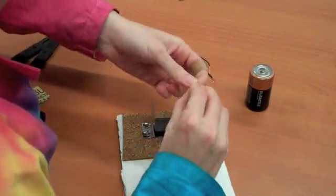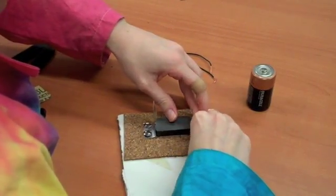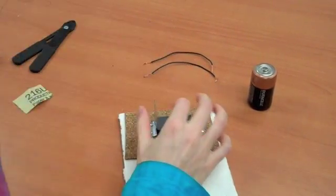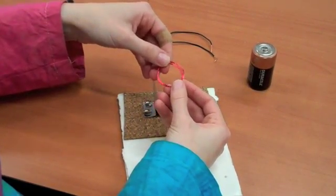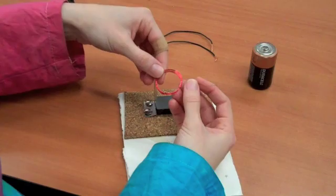Again, poke those in. Next, you'll need to make the loop of wire. If you've watched our videos before, you know that electricity moving through loops of wire can make an electromagnet. And that's what we're making here.